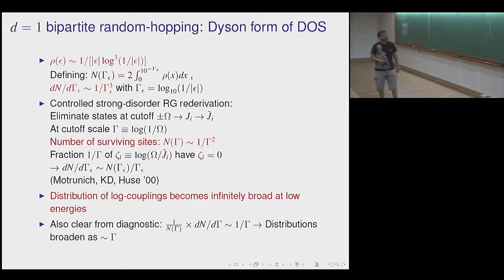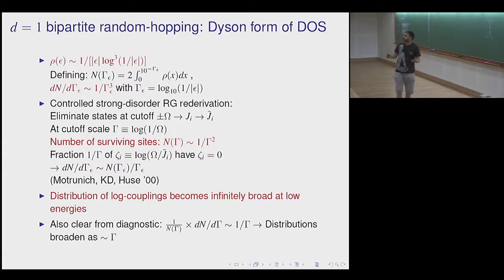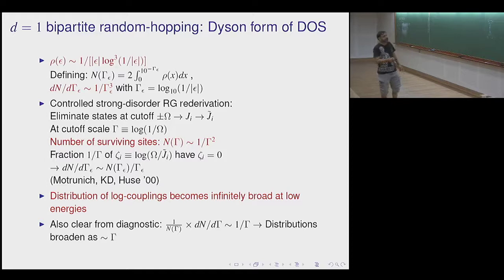The natural way to think about the Dyson singularity is to define the integrated density of states up to energy e^{−γ} and ask for N(γ): it behaves like 1/γ², so dN/dγ ~ 1/γ³. There is a controlled RG approach where you eliminate bonds iteratively in the Bhatt-Lee fashion and show you get exactly this answer. You can then use the diagnostic I described — look at dN/dγ divided by N — and it goes to zero, confirming you are in a strong disorder regime.